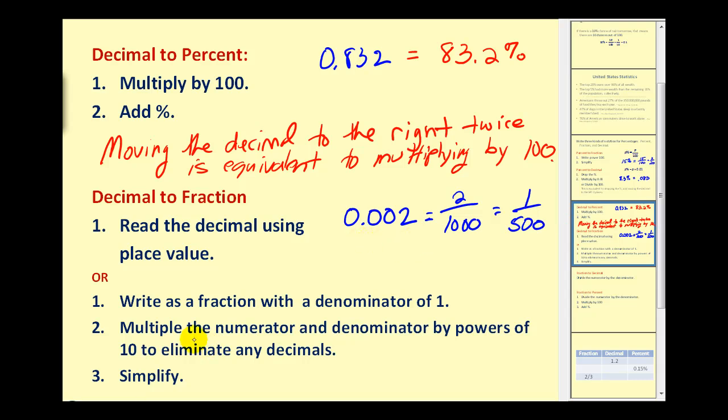Now, if you don't know your place values, what you can do is write as a fraction with the denominator of 1, then multiply the numerator and denominator by powers of 10 to eliminate any decimals and then simplify. So looking at that this way, we would write the decimal over 1. Now, every time we multiply by a power of 10, we move the decimal over to the right once. So we have to multiply both the top and the bottom by 10 to the third, which would give us 2 over 1,000, which is equal to 1 over 500. Again, I think the easiest way is just to read the decimal as you would using place value.